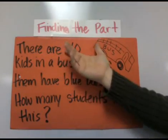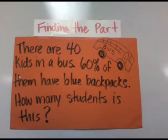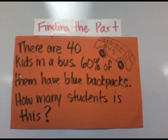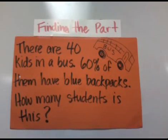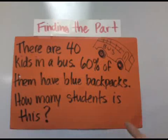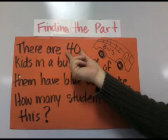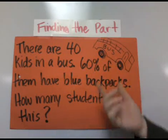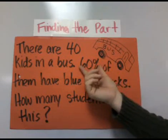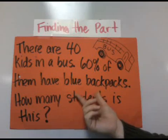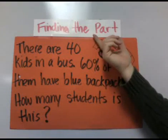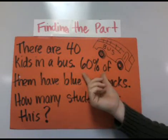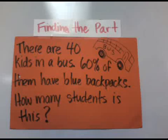In this video, we're going to be finding the part. The problem is: there are 40 kids in a bus, and 60% of them have blue backpacks — how many students is this? The 40 kids represents 100%, and only part of the kids have blue backpacks, so we're finding 60% of 40.